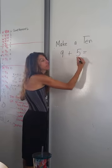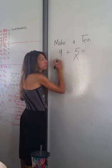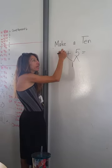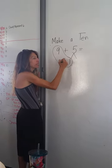They go to the 5. Hopefully they'll tell you 1. They'll pull 1 out from the 5. They'll make a happy 10.